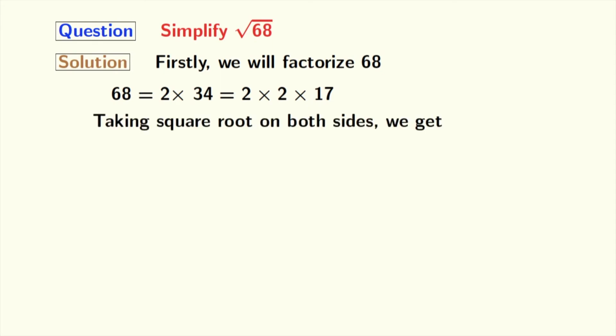Now we will take square root on both sides and doing that we get square root of 68 equals square root of 2 times 2 times 17. Using grouping, we get square root of 2 times 2 times square root of 17.